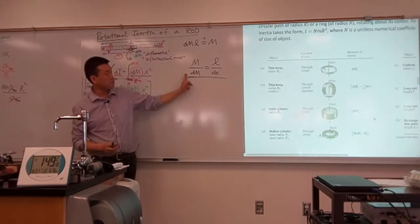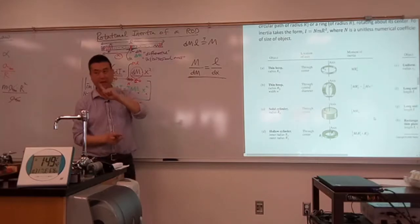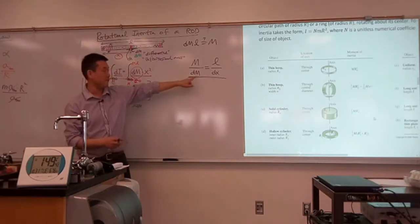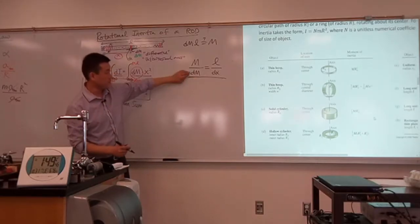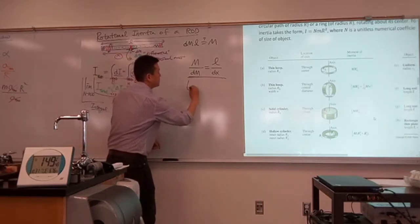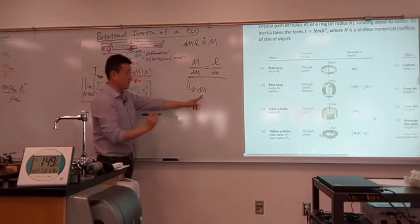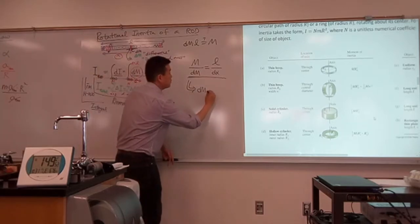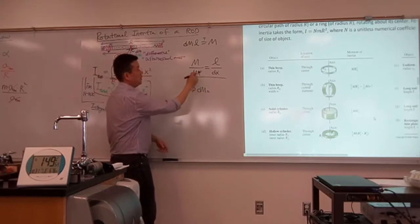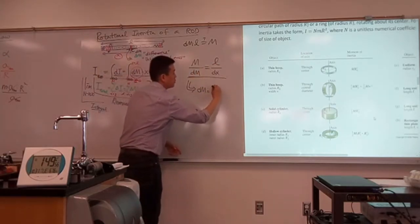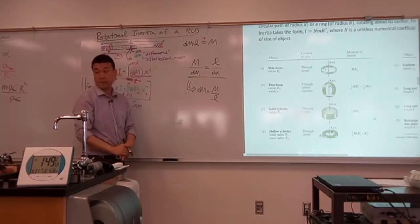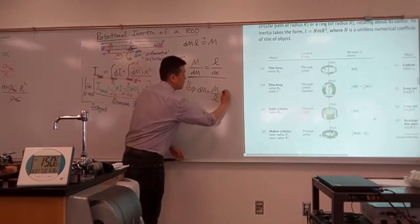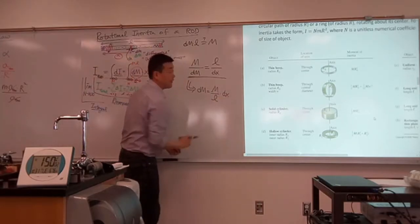This ratio actually assumes one thing — let me solve for dm. You get the infinitesimal amount of mass dm equals M over L — the total mass divided by the total length — times the infinitesimal amount of length dx.